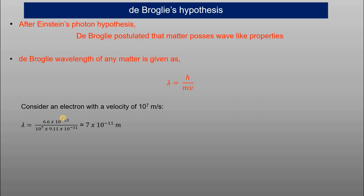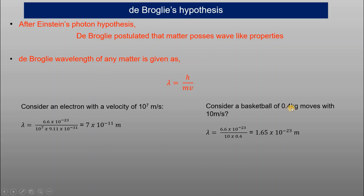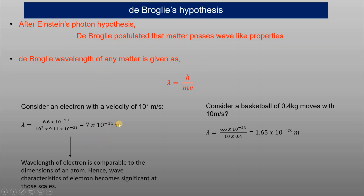Consider two examples. For an electron moving at a certain velocity, the de Broglie wavelength is on the order of 7×10⁻¹¹ meters — comparable to atomic dimensions (angstrom scale). For a macroscopic ball of mass 0.4 kg, the wavelength is approximately 10⁻²³ meters — far too small to observe. So wave properties are only meaningful when the wavelength is comparable to the system's dimensions.